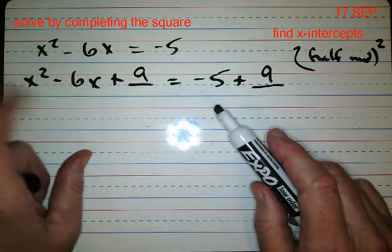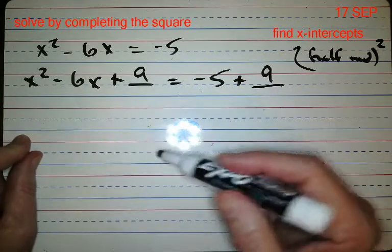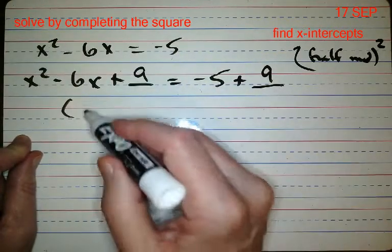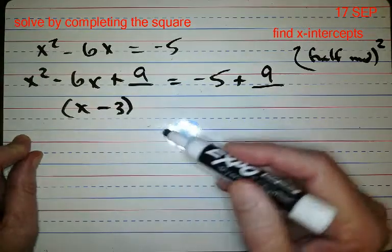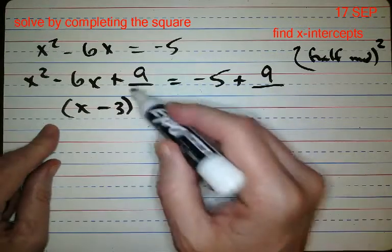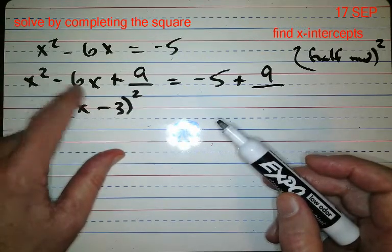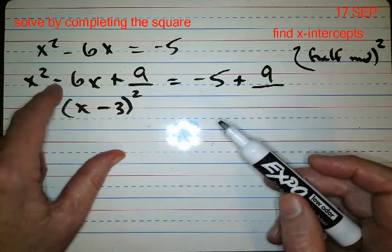Now remember the reason I told you the other day, just a few minutes ago, you want to be able to factor this. And remember that what's inside the factor is always half of what the middle is. So if this is negative six, half of the middle is negative three.